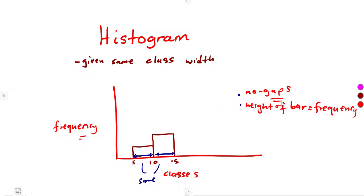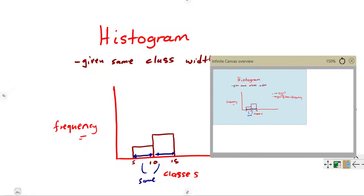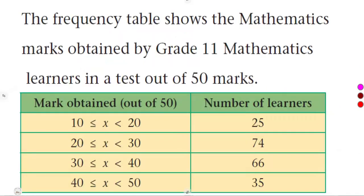Remember, all will be having the same width, as we had before in our Grade 10 mathematics, so nothing much. The basic presentation is, we are given a certain presentation of this nature. We are told that the frequency table shows the mathematics marks obtained by Grade 11 mathematics learners in a test out of 50 marks.